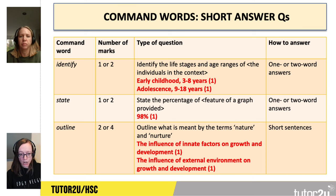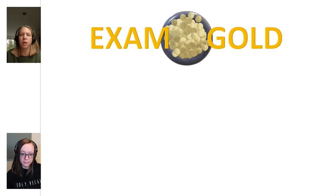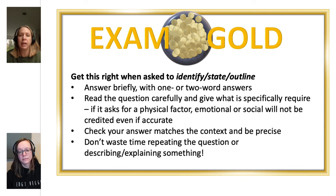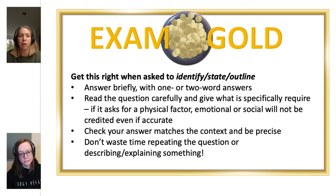The other low-value question type is outline — two or four marks. For example, 'outline what is meant by the terms nature and nurture.' For these outline questions, because you're being asked to outline a concept or definition, you need to write in a short sentence. When asked to identify, state or outline, students should answer briefly with one or two word answers — nice, short and sweet. Read the question carefully and give what is specifically required. If it asks for a physical factor, emotional or social will not be credited, even if accurate. Check your answer matches the context and be precise. Don't waste time repeating the question or explaining something when it's just an identify, state or outline.